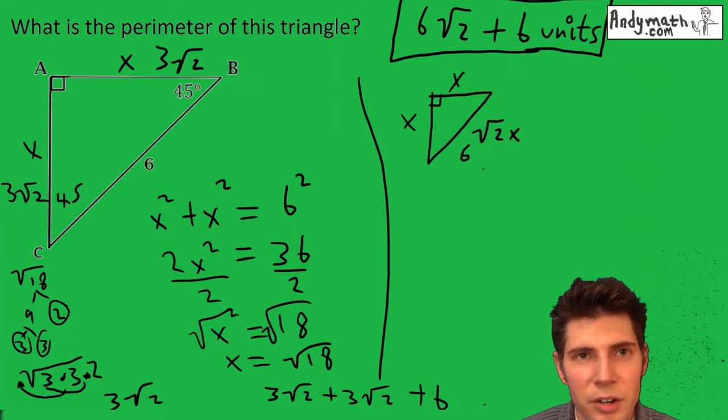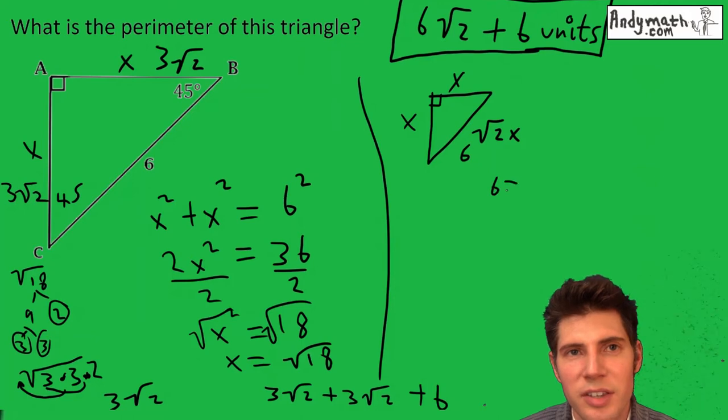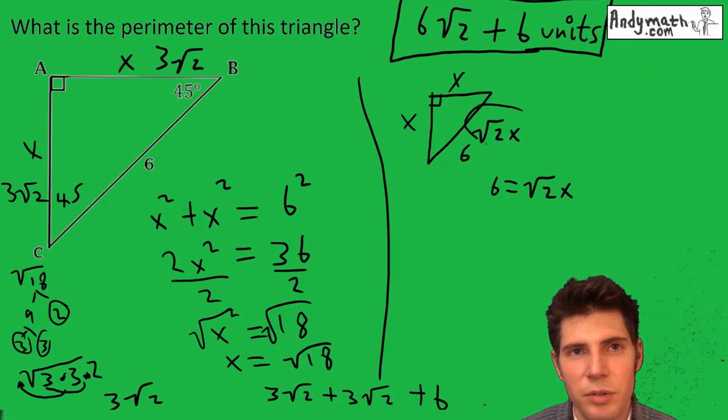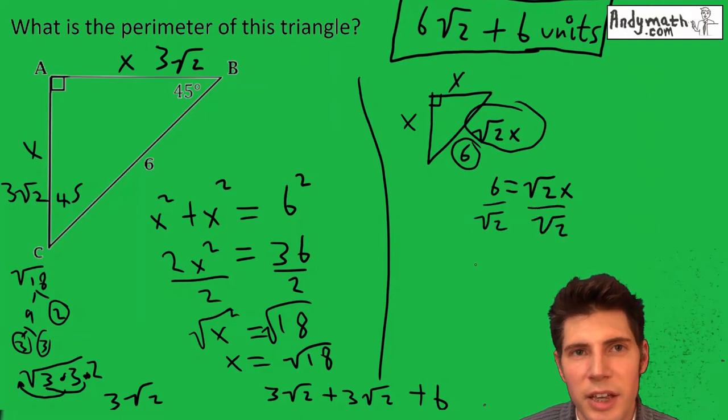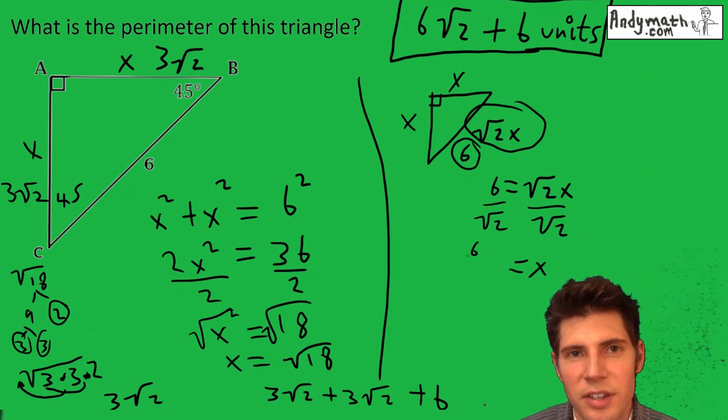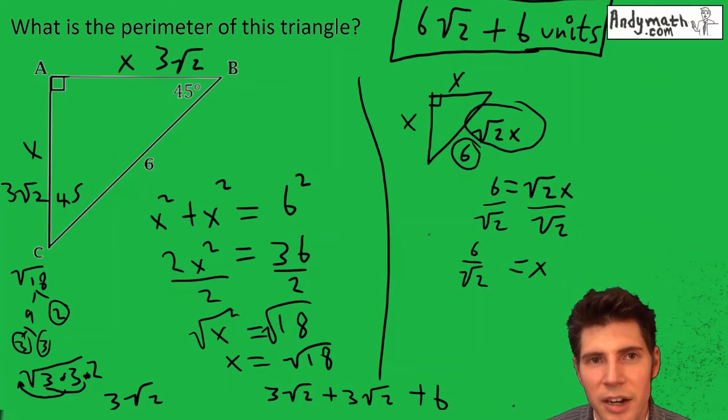So given that we know that this hypotenuse is six, we can set the six equal to root two x, because we know that this side is root two x and this side is six. Now solve for x. Divide both sides by root two and we get x equals six over root two.